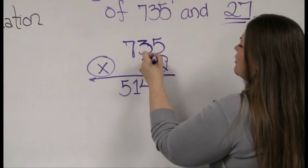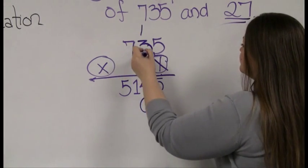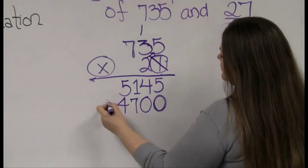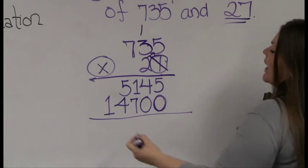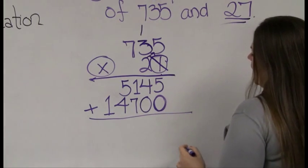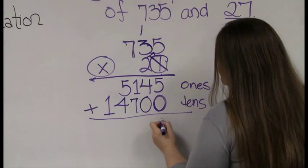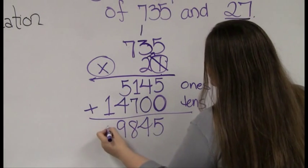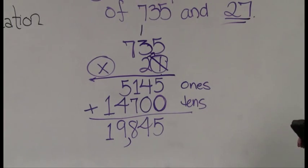So 2 times 5 is 10 — drop a 0, carry a 1. 2 times 3 is 6, add 1 is 7. 2 times 7 is 14 — no place to carry, so I write the entire 14. Now I add together everything from multiplying the 7 and everything from multiplying the 20. 5 plus 0 is 5, 4 plus 0 is 4, 1 plus 7 is 8, 5 plus 4 is 9, and nothing plus 1 is 1. So the answer is 19,845.